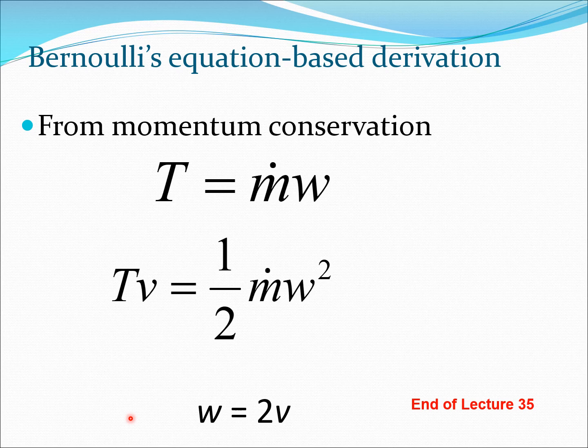This is the derivation of this formula w = 2v from the Bernoulli equation type of thinking. Here one of the advantages is that the equations we have derived while coming up with this formula can be used for obtaining the pressure field. We are going to see that in our next lecture. See you then.